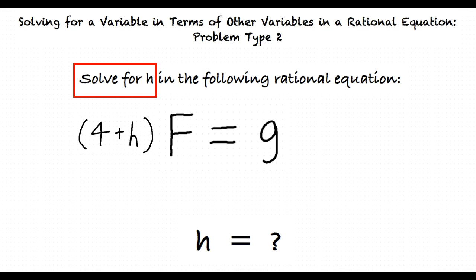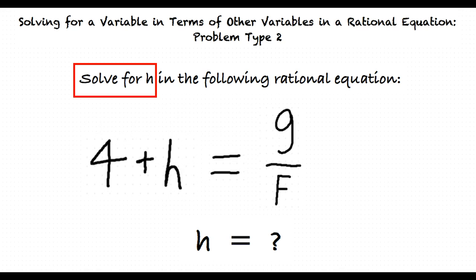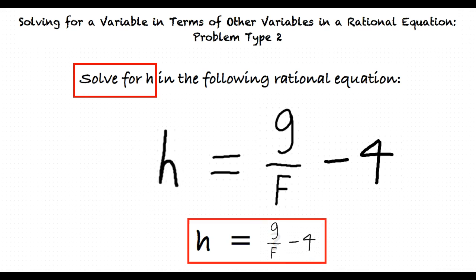To further isolate h, we divide both sides of the equation by f, yielding 4 plus h equals g over f. Lastly, subtract 4 from both sides, resulting in a final answer of h equals g over f minus 4.